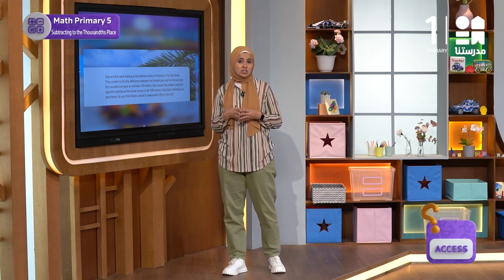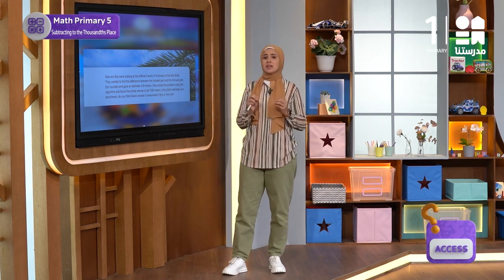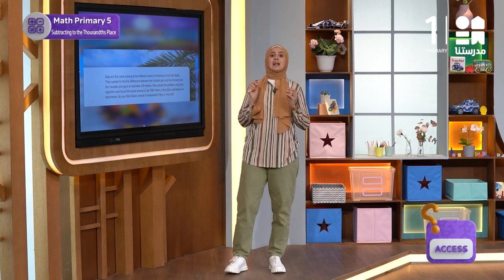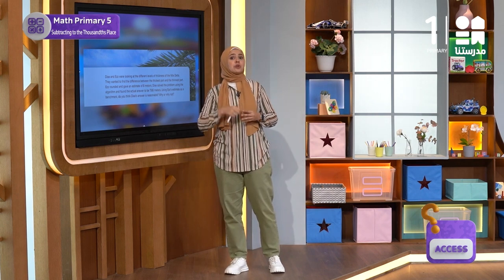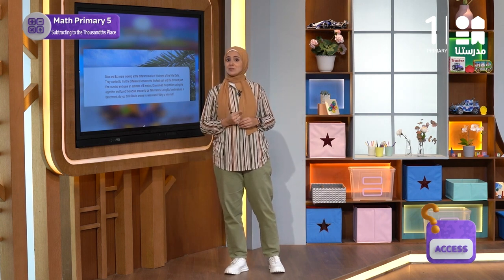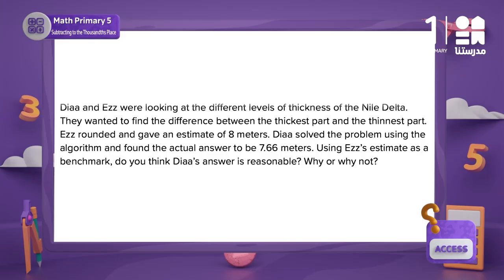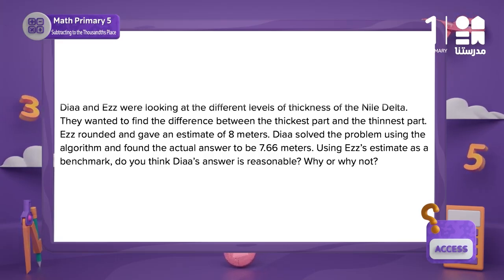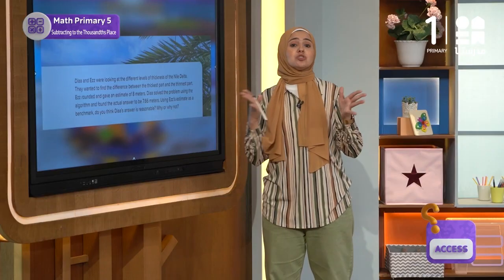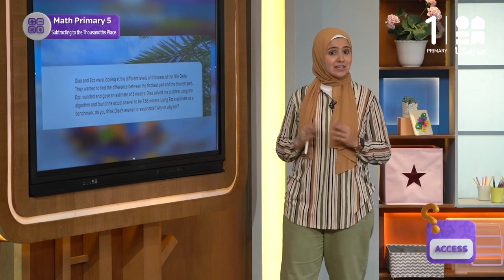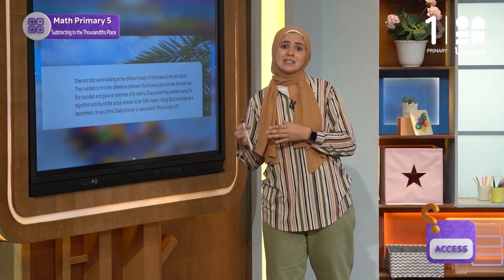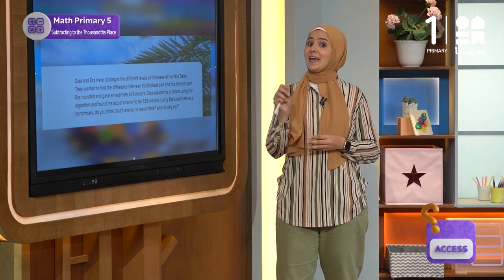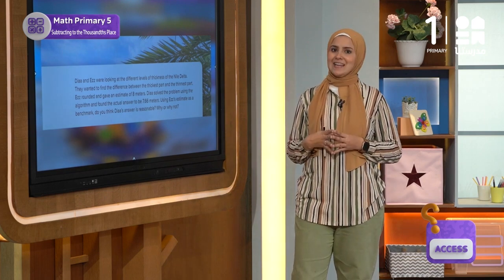By using Aiz's estimation as a benchmark, do you think that Dio's answer is reasonable? I'll give you enough time to think about that and explain the reason from your own point of view. Dio's answer is acceptable because if we round 7.66 to a whole number, it will be 8 — the same estimate Aiz had.